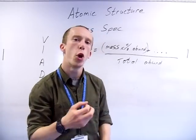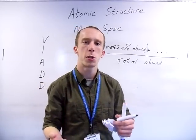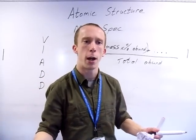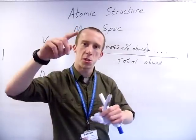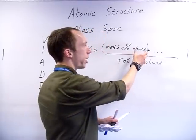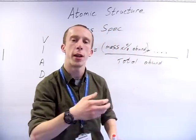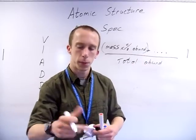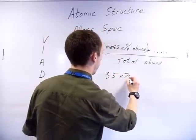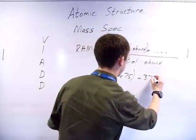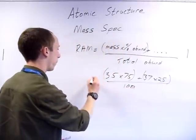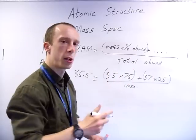Your total abundance will not always be 100 - that's a key thing to stress. People always think their numbers don't add up to 100 and start panicking. They can alter the scale on those mass spectra readings to be either above or below. So it's just all the abundances added together that goes on the bottom. The chlorine one looks something like this - and that's how it's actually worked out.